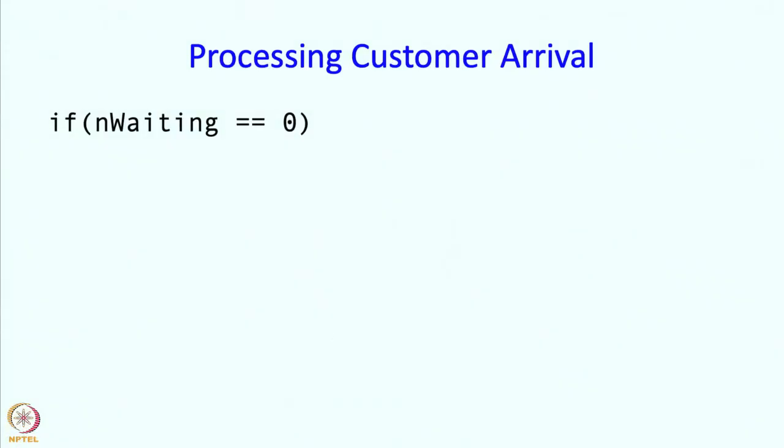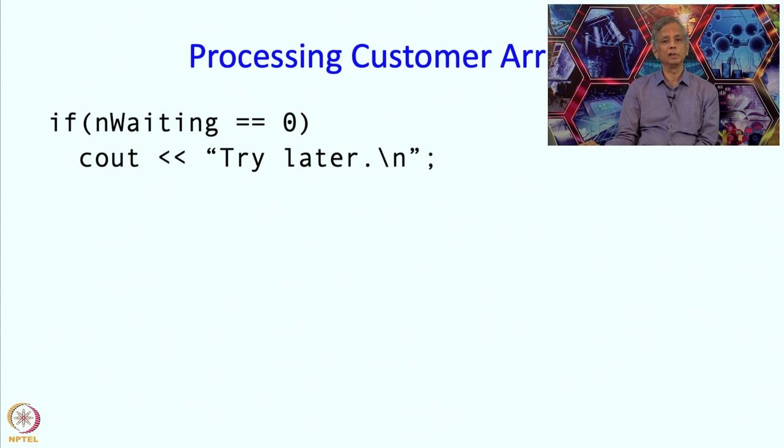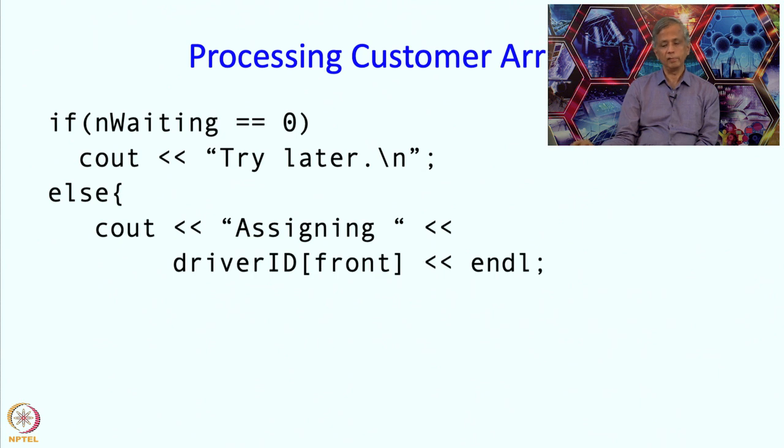How do we process a customer? Well, this is kind of the complement of it, complement of driver processing. Now this time we are going to check if there are any waiting drivers at all, if there are no waiting drivers, then the customer cannot be served. So we have to send the message, tell the customer, look, try later. Well, of course, this program, this will be read, the output of the program will be read by the controller who is typing the Cs and Ds and the details of the drivers. So the controller will read this message, try later and presumably the controller will tell the customer. Otherwise what happens? Otherwise we are going to print a message saying, look, here is the driver for you. And which driver ID will we take? Well, according to our invariants, the driver ID in the index front is the earliest waiting driver. So that driver ID is going to be sent or assigned to that customer.